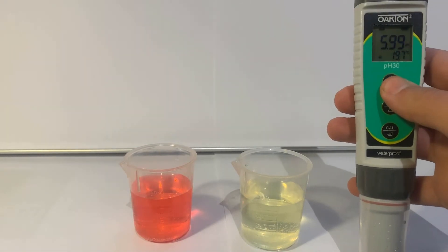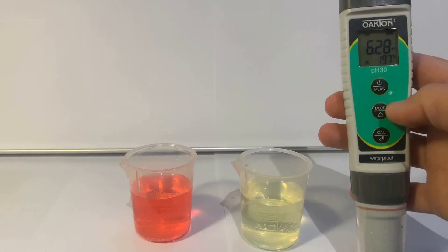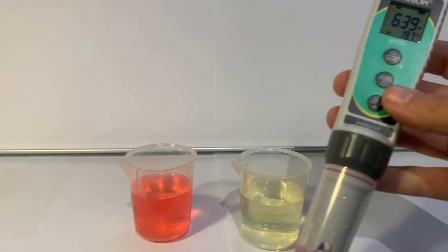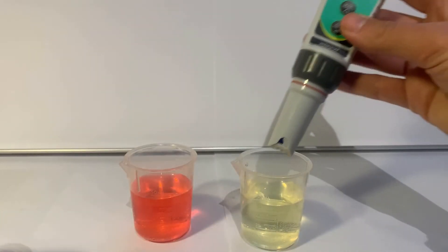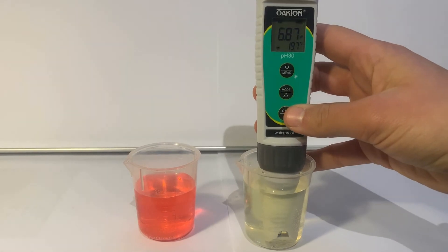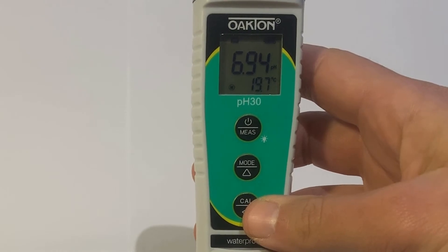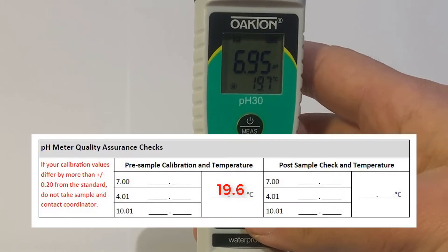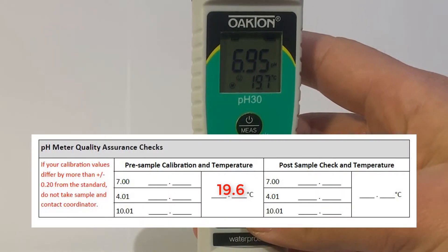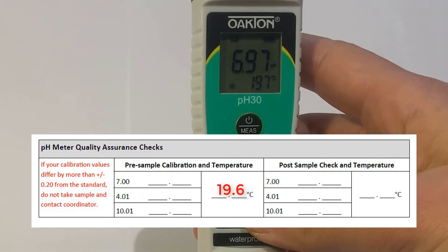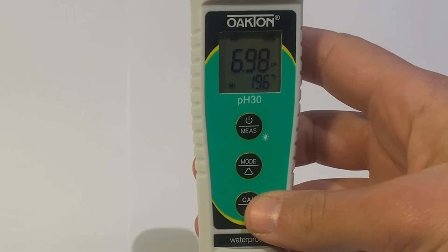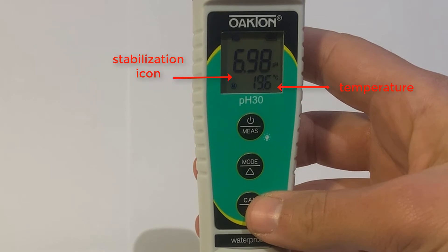Always start with your Buffer 7 solution. Place your meter into the yellow cup and wait for the stabilization icon, which is the small smiley face, to appear. Once it appears record your temperature, which is the bottom number on your datasheet. The top number is what your meter is currently reading. This will most likely be very close to 7, but not exact.